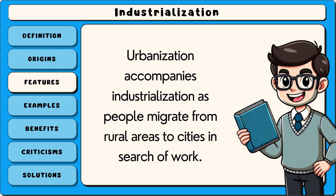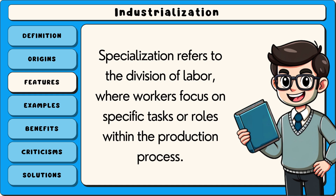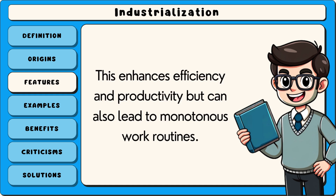Urbanisation accompanies industrialisation as people migrate from rural areas to cities in search of work. This results in the growth of urban centres, often near industrial hubs. Specialisation refers to the division of labour, where workers focus on specific tasks or roles within the production process. This enhances efficiency and productivity, but can also lead to monotonous work routines.